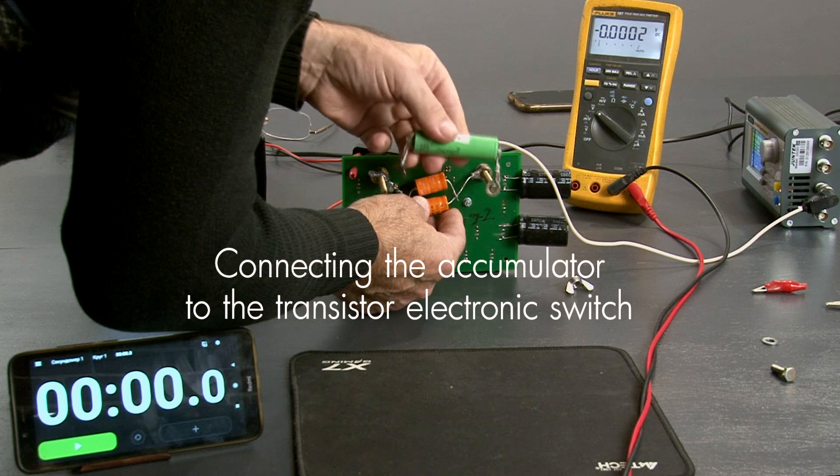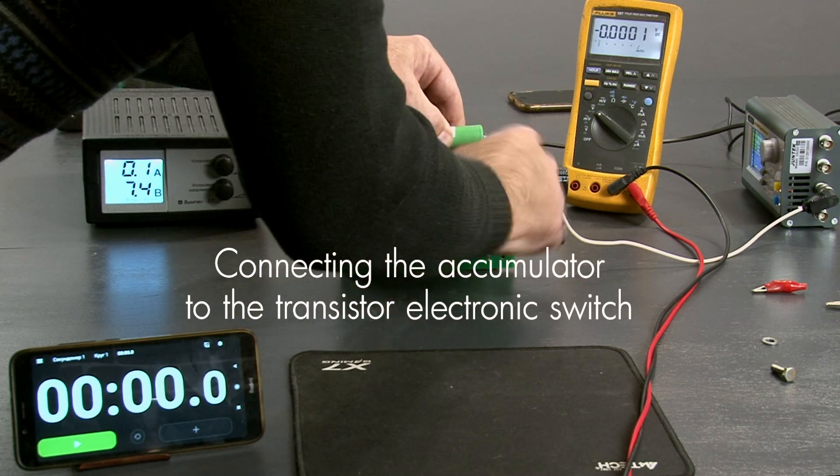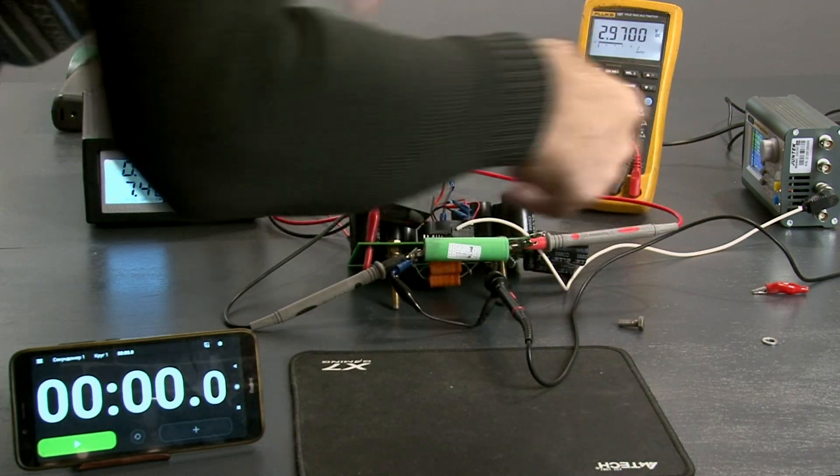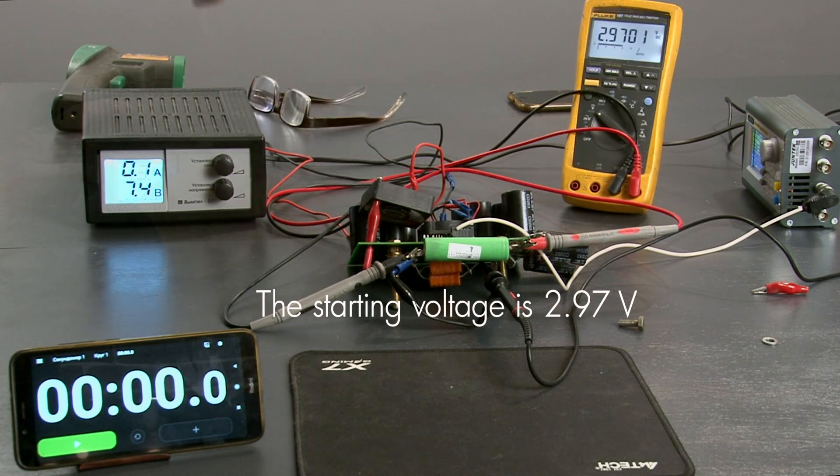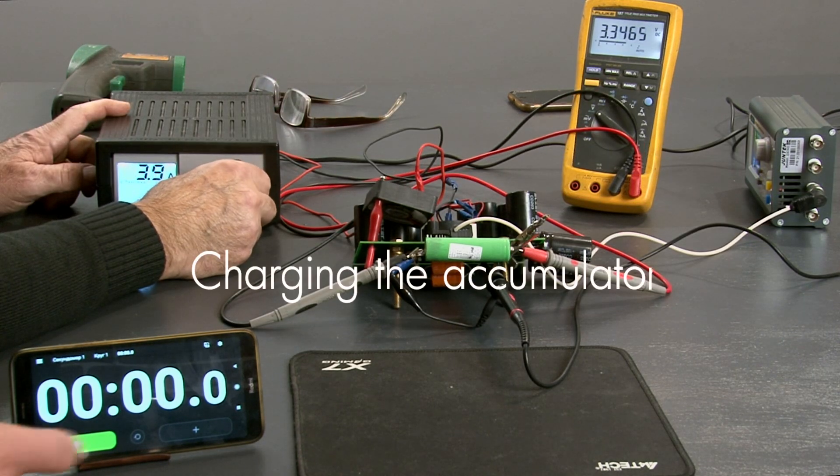Connecting the accumulator to the transistor electronic switch. The starting voltage is 2.97. Charging the accumulator.